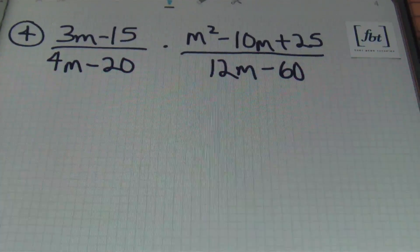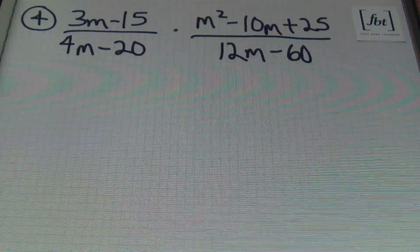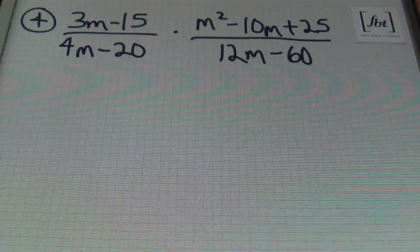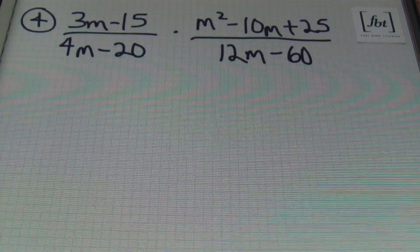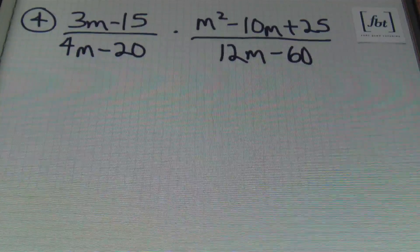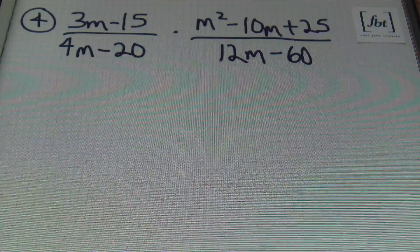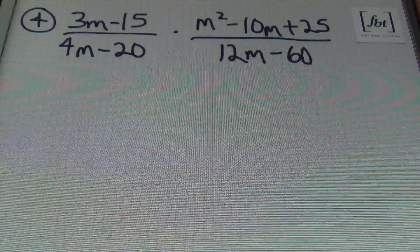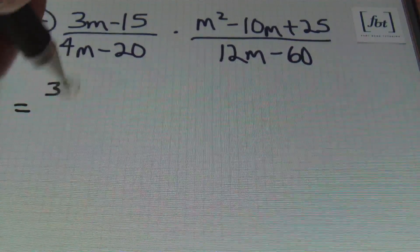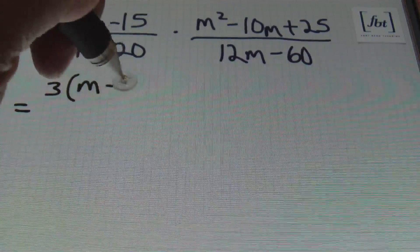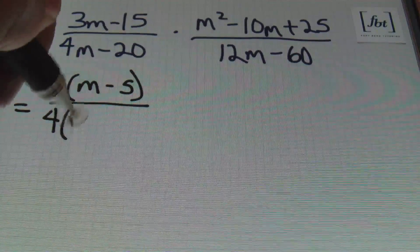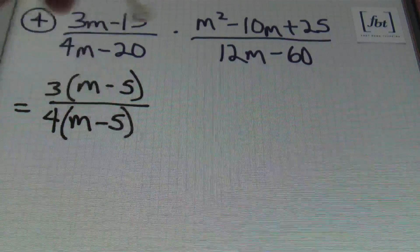Problem number four: 3m minus 15 over 4m minus 20 times m squared minus 10m plus 25 over 12m minus 60. Once again, I want to factor completely before I simplify and multiply. In the numerator I can factor out a 3, leaving m minus 5. In the denominator, factoring out a 4 leaves me with m minus 5.